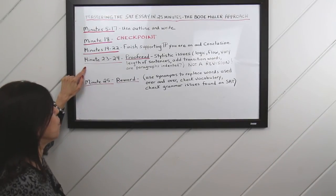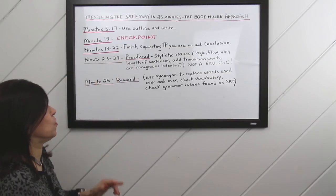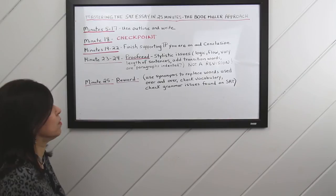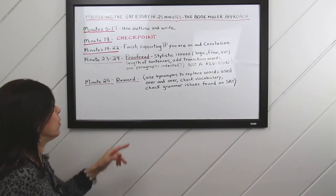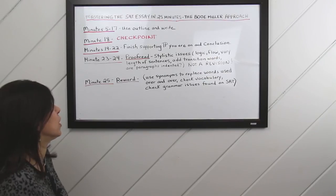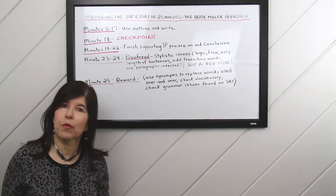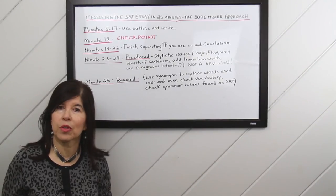Minute twenty-three to twenty-four, you're going to proofread, first for stylistic issues like the logic of the essay, the flow. You can vary the length of sentences, add transition words, and check if paragraphs are indented. It's not a revision. You're just looking for these errors, if any of them are glaring.